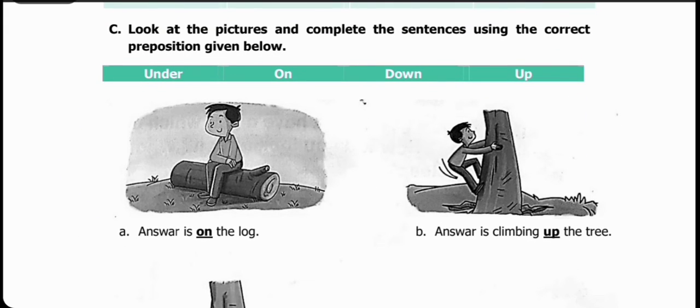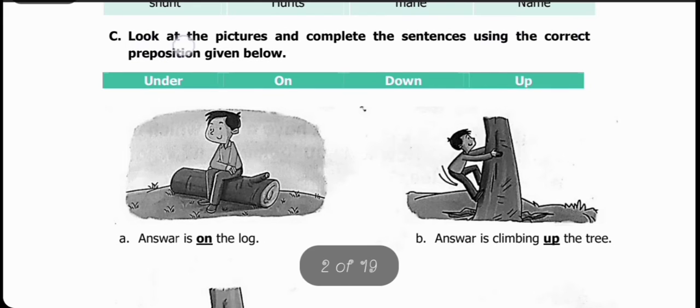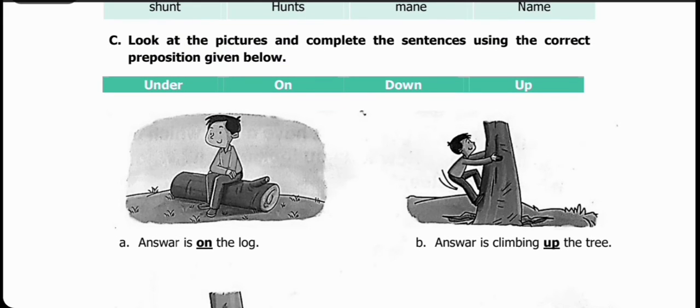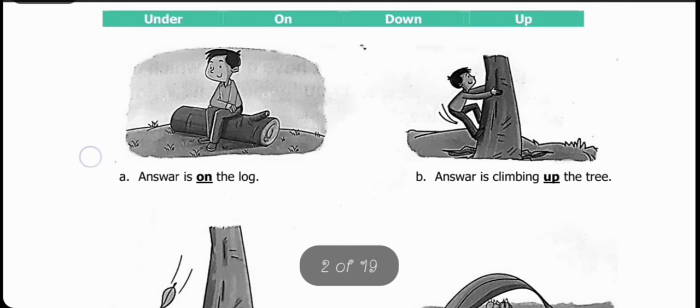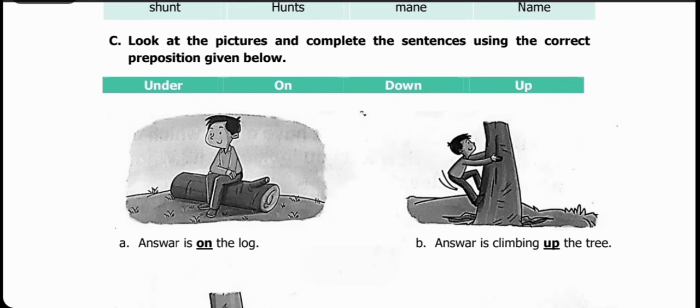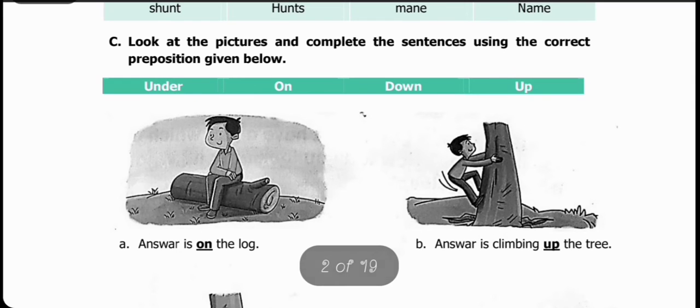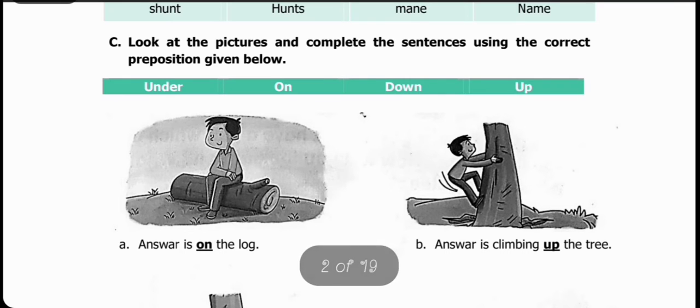Next question is: Look at the pictures and complete the sentences using the correct prepositions given below. Students, we have four sentences. Looking at the pictures, we have to use prepositions. Preposition kise kehte hain? Prepositions are words that show the position of a noun or pronoun in a sentence. For example: under, on, down, up.